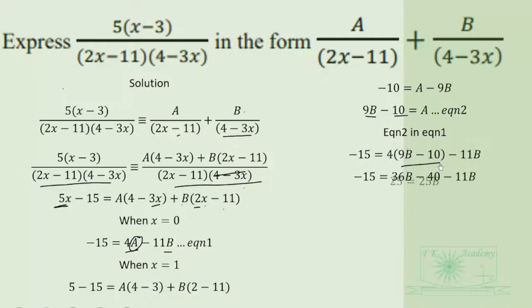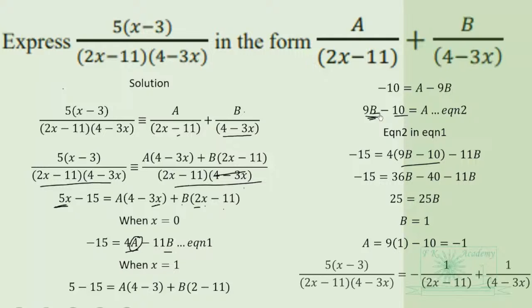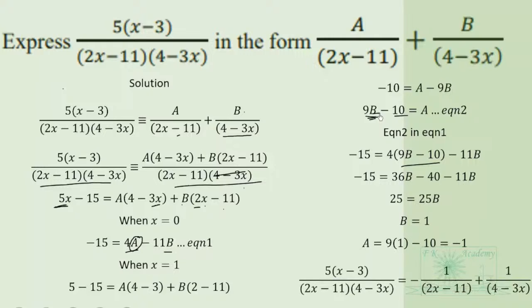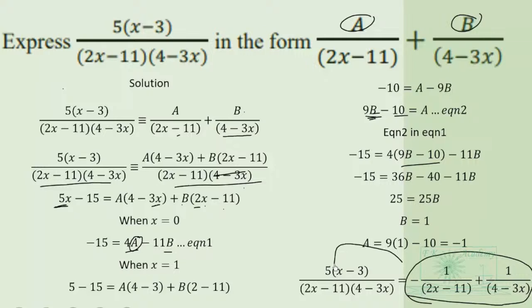After expanding and simplifying, we find A = −1 and B = 1. Therefore, 5(x − 3) over (2x − 11)(4 − 3x) equals negative 1 over (2x − 11) plus 1 over (4 − 3x). That is the partial fraction decomposition.